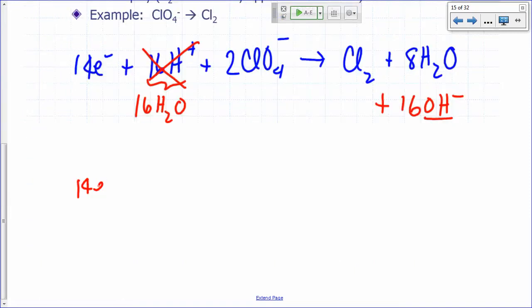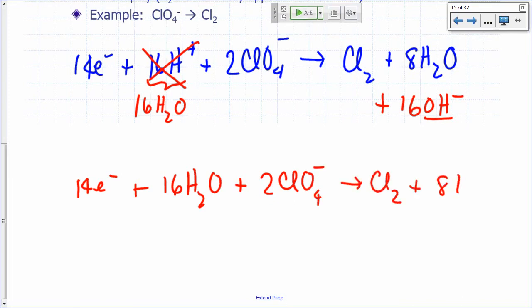And so my balanced half-reaction in basic solution would be 14 electrons plus 16 H2O plus 2 perchlorate yields Cl2 plus 8 H2O plus 16 hydroxides. Now, one last step you need to do here is to simplify. You see 16 waters here and 8 waters here. What do you do with that? That means that's a net loss of just 8, right? You start with 16, you end up with 8. So you can just get rid of this 8 and then replace that by 8.